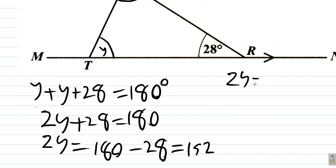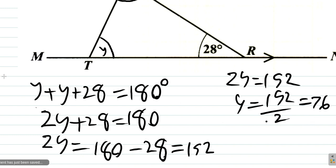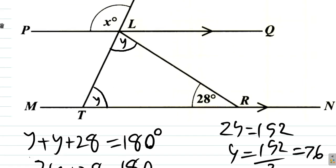You get 152. So, 2Y equals 152. So, divide by 2. You get Y equals 152 over 2. Which is 152 over 2. 76 degrees. 76 degrees. So, you get 76 degrees. 76 degrees.